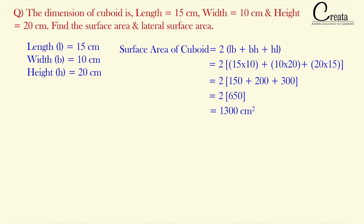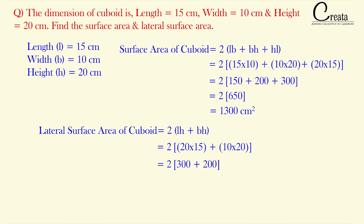This question is also asking for the lateral surface area, meaning we have to exclude the surface area of the top and bottom face. Using the formula 2(LH + BH), putting the values, we get the lateral surface area as 1000 cm². Surface area of the cuboid is the total area of the 6 faces, and lateral surface area excludes the top and bottom face.